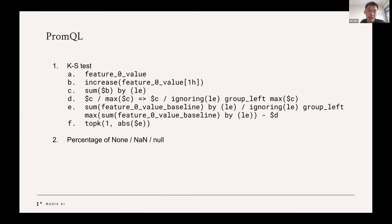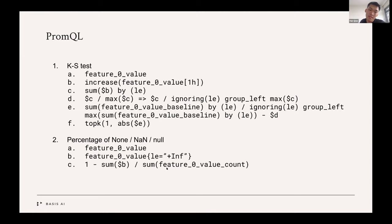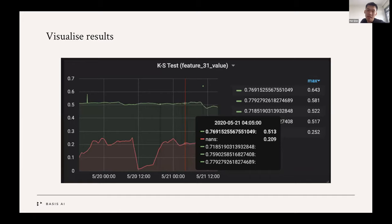We can also track percentage of nones or the invalid values in your data stream. So we start off with the same metric, features_0_value, and then we filter by just looking at the infinity bucket. So one trick we did with the client library was to group all the invalid values into a separate metric so that those that fall under the infinity bin in the histogram are all valid values. So we first get the valid values and then we divide by the total number of items, including the invalid stuff to get a ratio. And so when we take one minus the ratio, we will get the percentage of the invalid data.